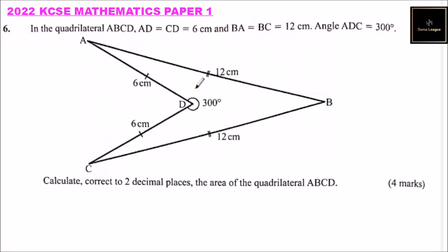This is a 2022 KCSE Mathematics Paper One, number six. In a quadrilateral ABCD, AD equals CD equals six centimeters — those two sides are equal — and BA equals BC equals 12 centimeters, those two sides are also equal, as shown with the symbols. Angle ADC is 300 degrees, that is the reflex angle. That is the information given.